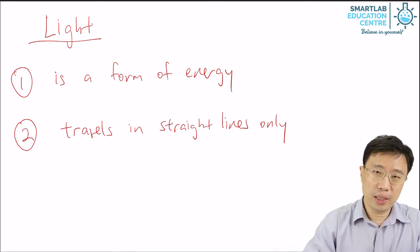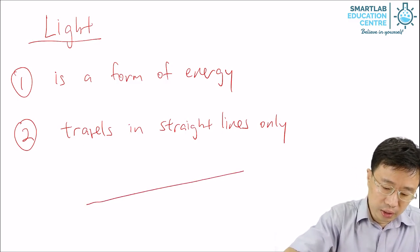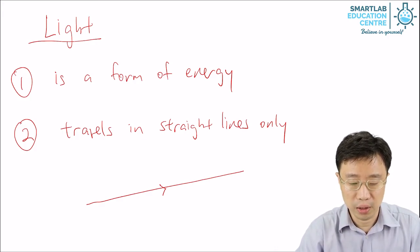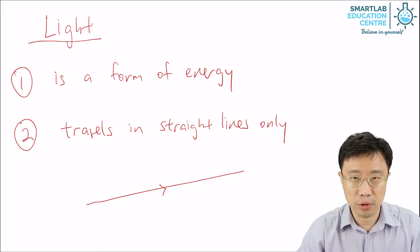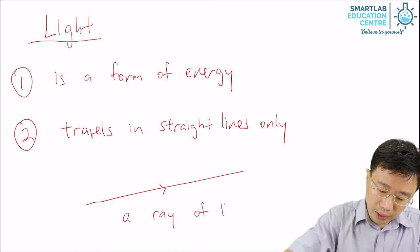So how do you represent light that's traveling? You use a straight line and put in an arrow to show the direction of travel. What do you call this light you've drawn? You call this a ray of light.